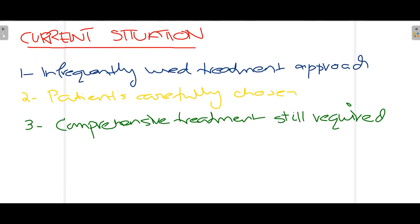Regarding the current situation, serial extraction is not frequently used compared to comprehensive treatments such as aligners and edgewise appliances — more commonly known as braces. Patients must be chosen very carefully, as selecting an unsuitable patient will worsen the outcome. Even when serial extraction is performed, the patient will likely require comprehensive treatment in the future — either with reduced duration if done correctly, or increased duration if the situation is worsened.